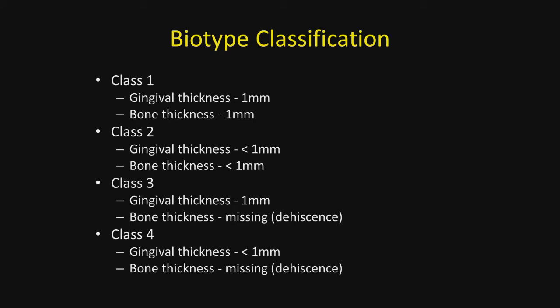This is the biotype classification I am offering. Class one: gingival thickness is one millimeter, bony thickness is one millimeter. Class two: gingival thickness is less than one millimeter. Class three: gingival thickness is one millimeter, but the bone thickness is missing and we have a dehiscence. Class four: gingival thickness of less than a millimeter and there is a dehiscence.